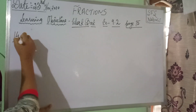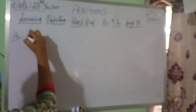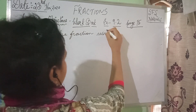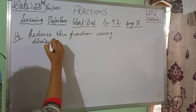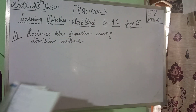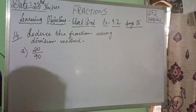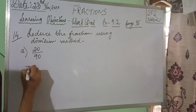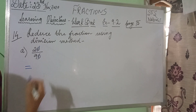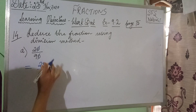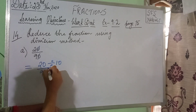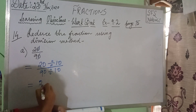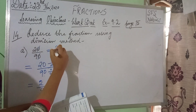Now let us try question number 14a — reduce the fractions using the division method. The first fraction is 20 divided by 90. See, children, when you have a zero at the end, you can directly cancel the zeros off, because they are divisible by 10. Once you divide 20 by 10 and 90 by 10, you get 2 by 9. That is basically what you are doing in the division method.